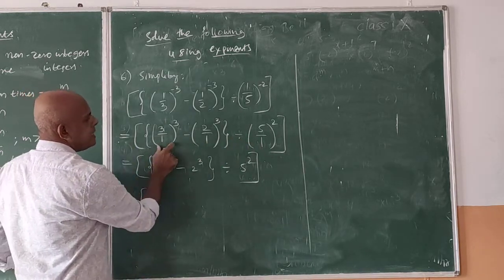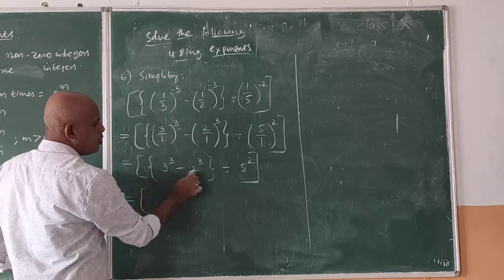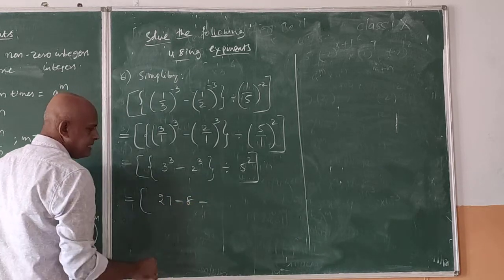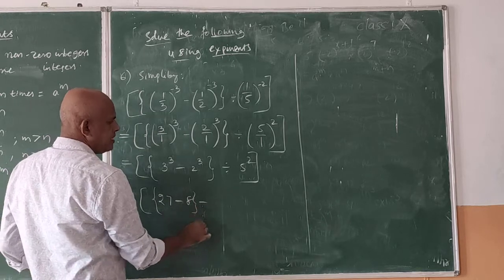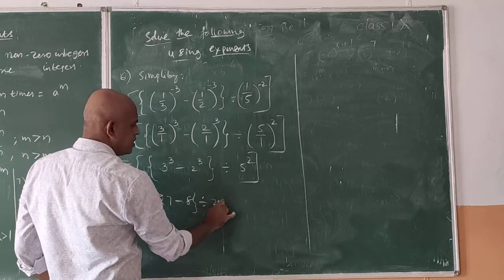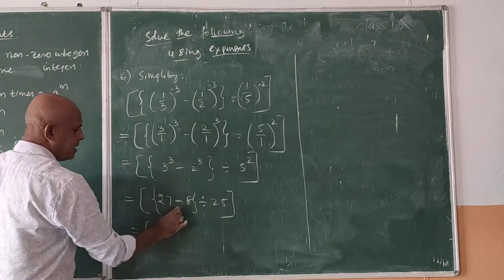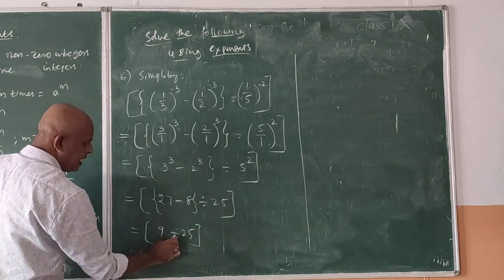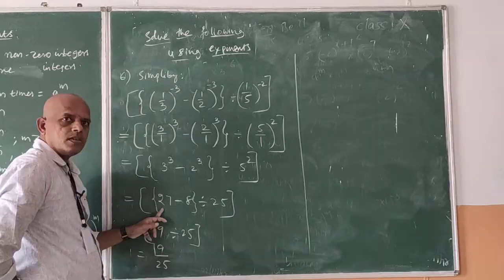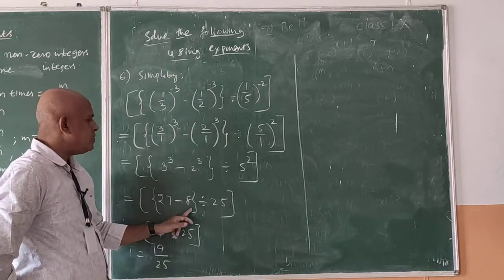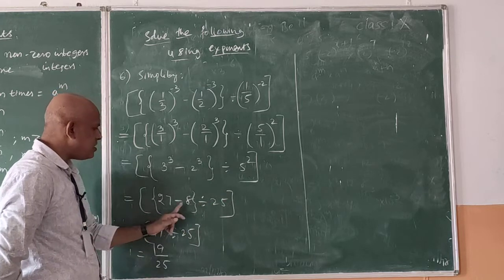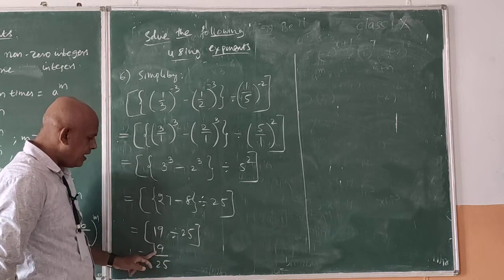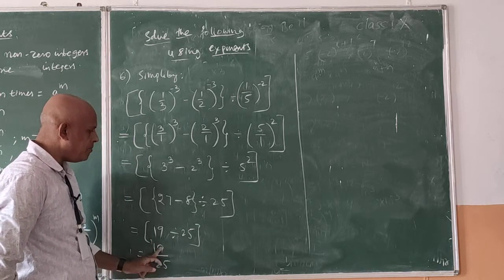Divided by 5 squared, which is 25. So we have 19 divided by 25, that is 19 by 25. Therefore the final answer to the 6th problem is 19 by 25.